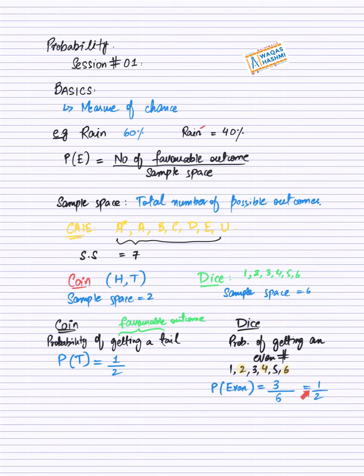Probability ko, aapne lazmi simplify karna hota hai. Toh numerator kya hota hai, beta aapka? Favorable outcome, wo cheez jo aapko chahiye hai. Divide me konsa hai, ka aapke paas sample space, total number of possible outcomes.